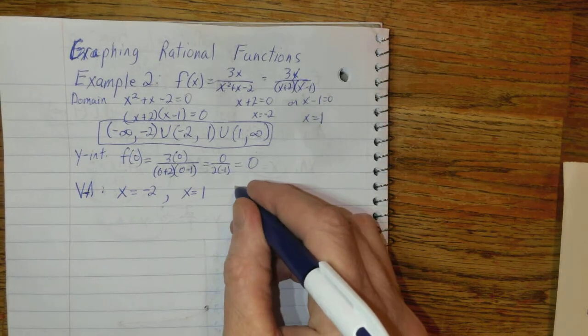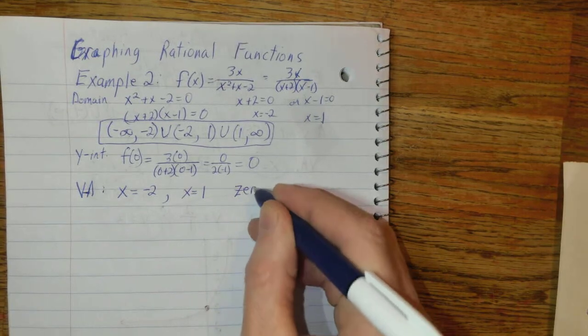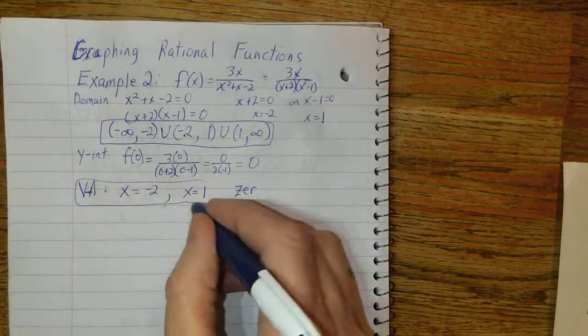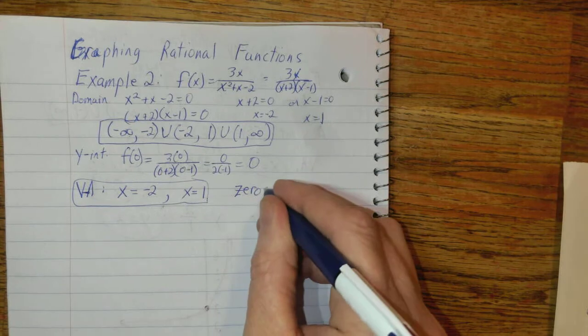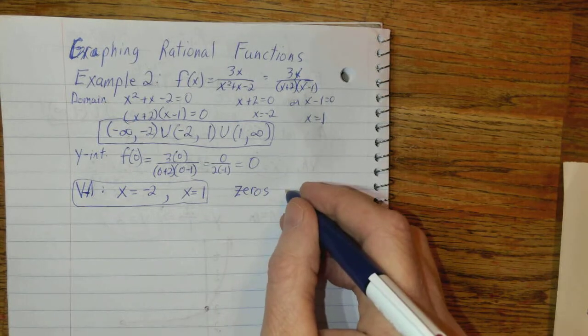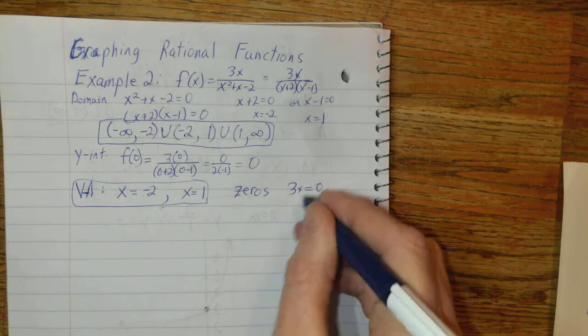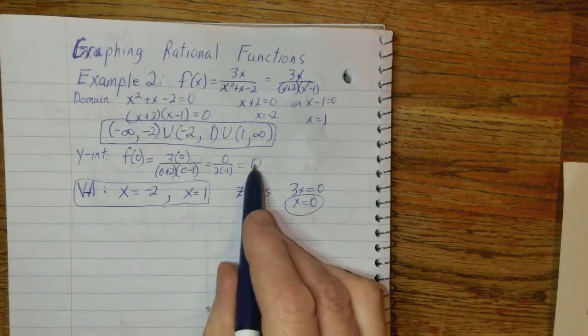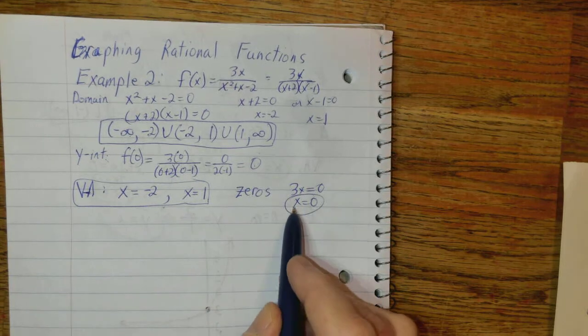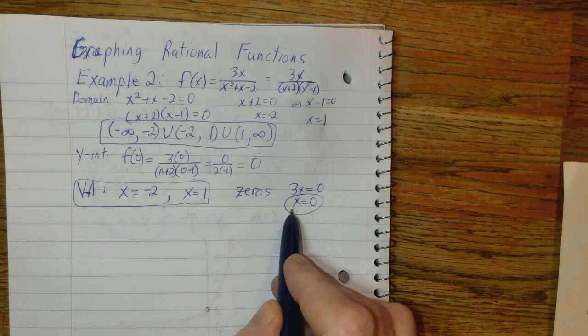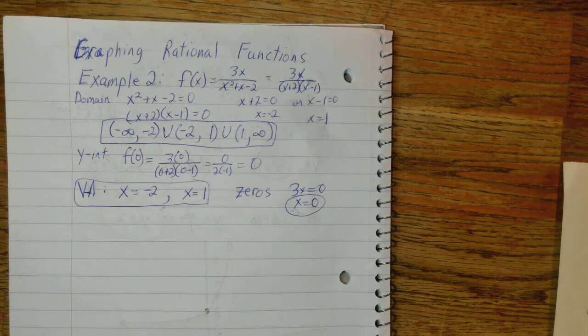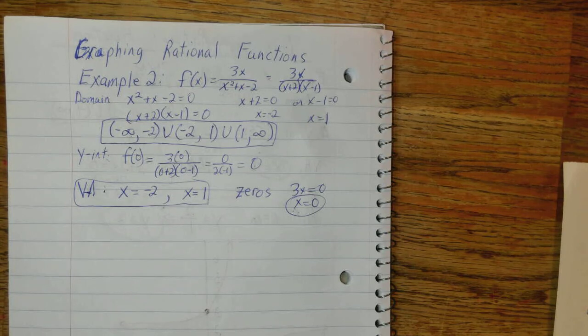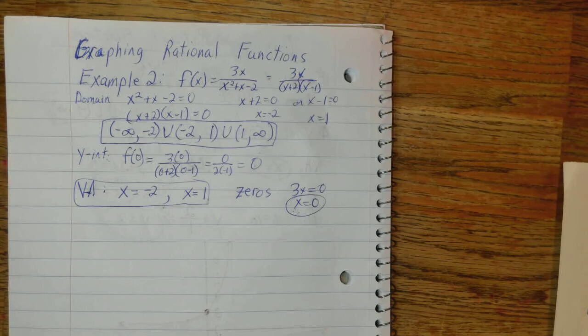Now, the 0's. Kind of partition that off. The 0's, we set our numerator. 3x equal to 0. So, x equals 0 is a 0. Which made sense, since the y-intercept is 0. Then, the x-intercept is also 0. So, okay. So, we got the 0, the lone 0 in the problem.